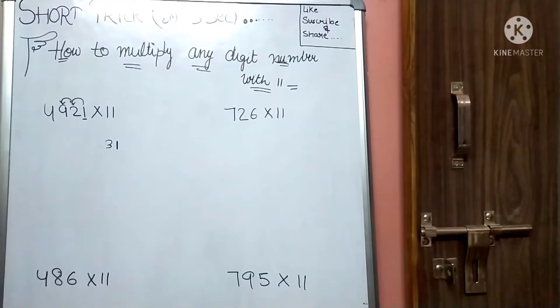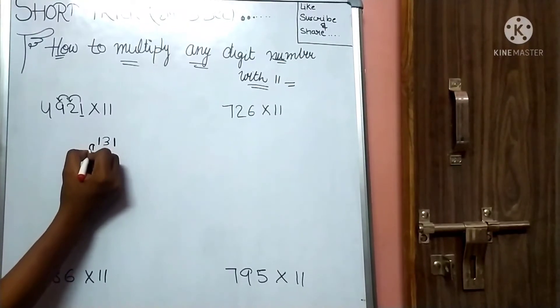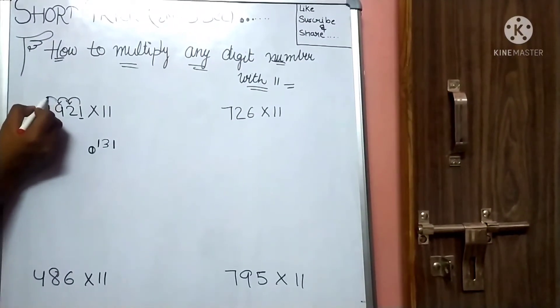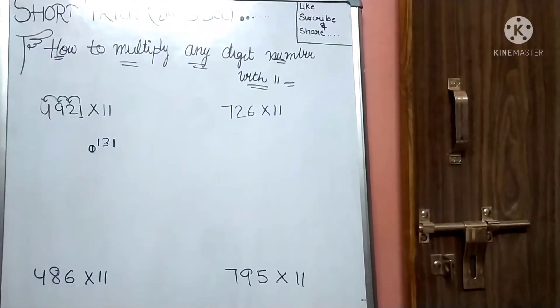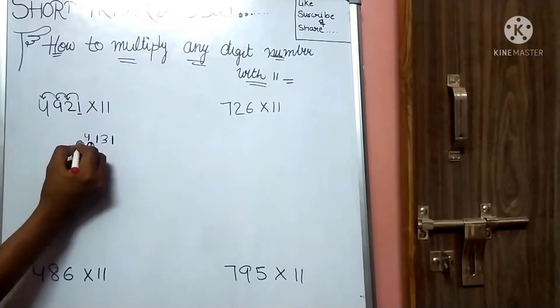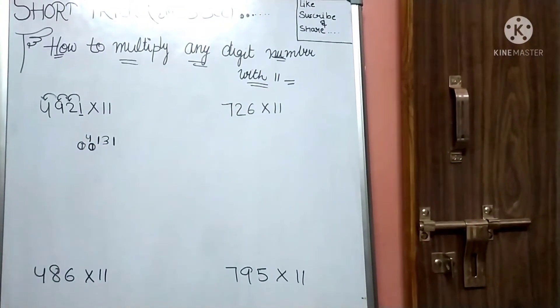2 plus 9 equals 11. So 1 will come here and I will keep 1 here. Because we can't keep 11 directly. Now, how much will it be? 9 plus 4 equals 13. And 1 carry. How much will it be? 14. And which carry will be saved? I have to complete it.